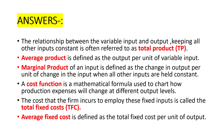What is average product? Average product is defined as the output per unit of variable input. What is marginal product? Marginal product of an input is defined as the change in output per unit of change in the input, when all other inputs are held constant. What is the cost function? Cost function is the mathematical formula used to chart how production expenses will change at different output levels.